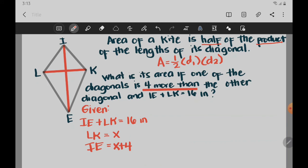Now let us have the solution. So we are going to use this equation, IE plus LK equals 16. And then we just substitute in the equation the given values. So IE, which is X plus 4, we substitute it. Plus LK, which is X, equals 16.